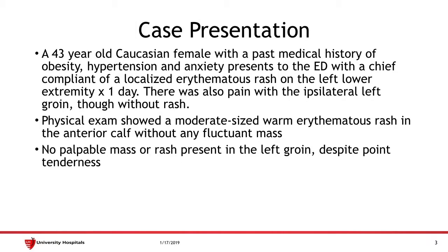For a case presentation, we have a 43-year-old Caucasian female with a past medical history of obesity, hypertension, and anxiety who presented to the emergency department with a chief complaint of a very localized erythematous rash on her left lower calf for one day. She was also complaining of pain to her ipsilateral groin, though there was no rash there. Physical exam showed a moderate-size warm erythematous rash on the anterior calf without any fluctuant mass, consistent with a cellulitis. In the left groin, there wasn't any palpable mass or rash present despite some point tenderness there.